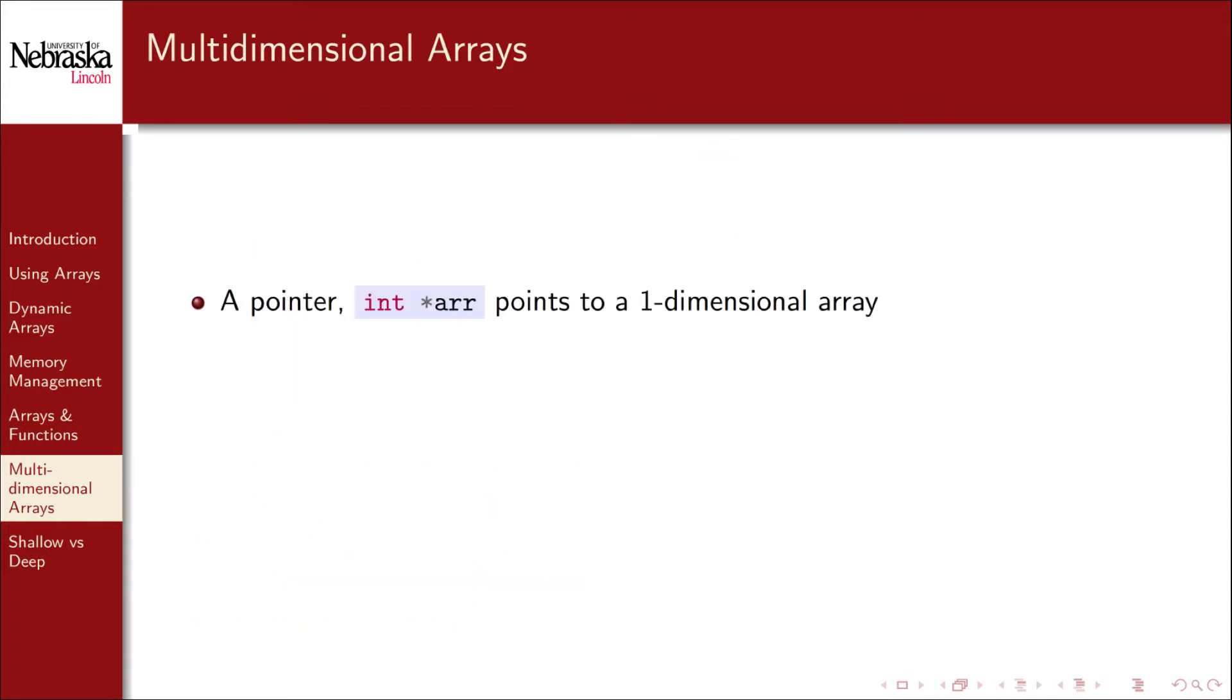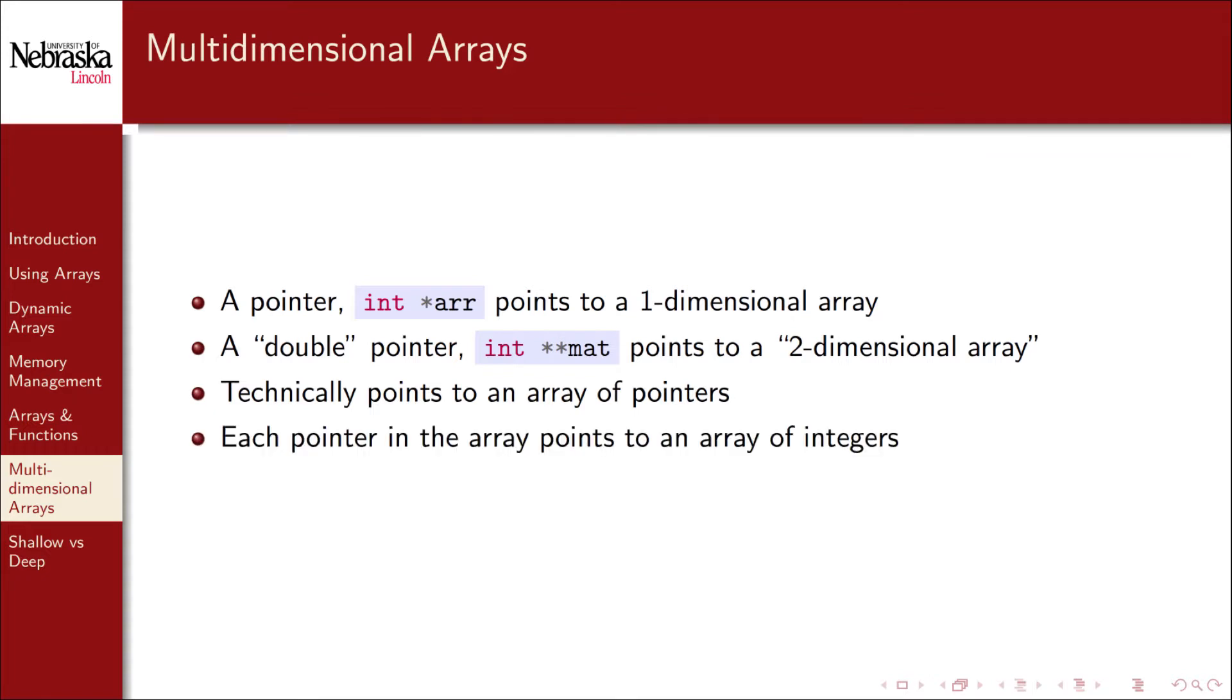The way that we've been using one-dimensional arrays is with pointers. We can use a double pointer, or more accurately a pointer to a pointer, to point to a two-dimensional array. Technically this double pointer points to an array of pointers, and each pointer in that array points to an array of integers.